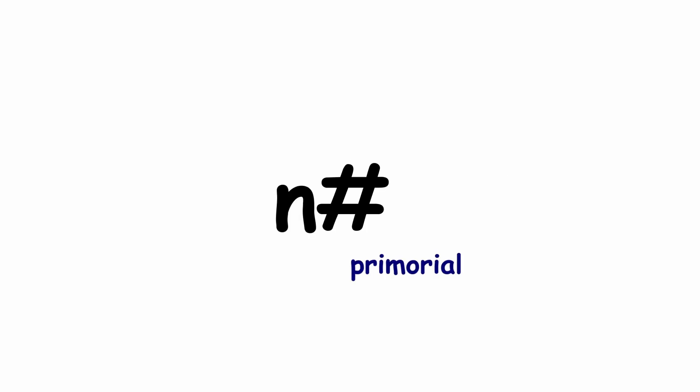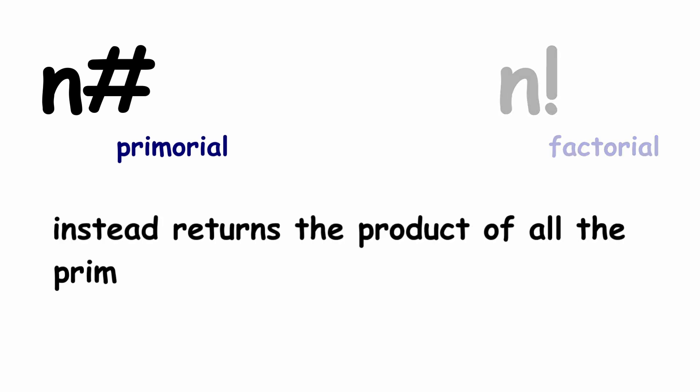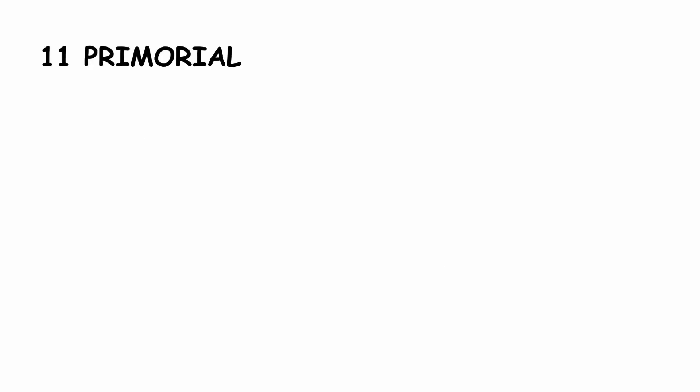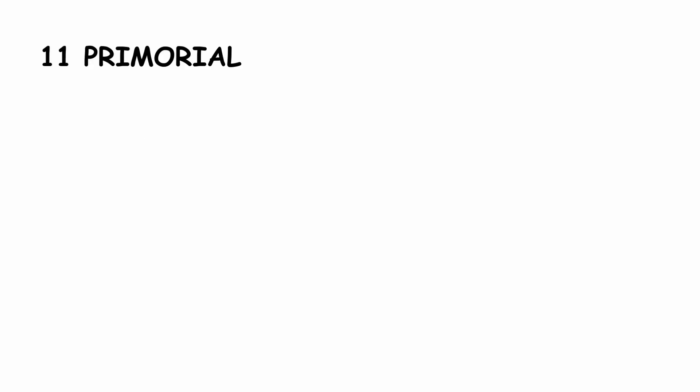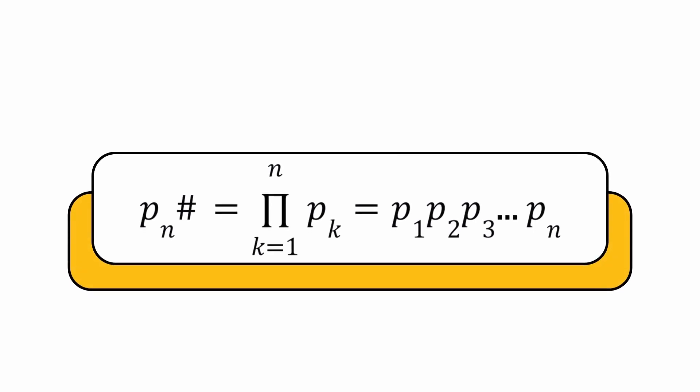The primordial, denoted by a number sign, is similar to the factorial. However, it instead returns the product of all the prime numbers less than or equal to n. For instance, 11 primordial can be evaluated like this. In general, the primordial of a prime number can be written like so, with product notation using uppercase pi.